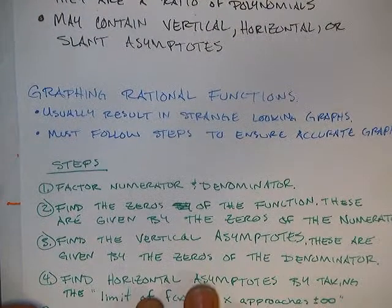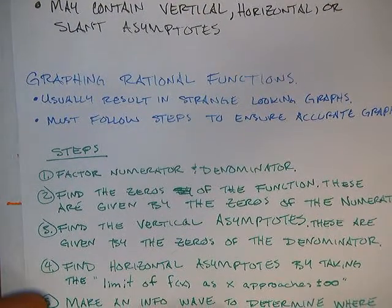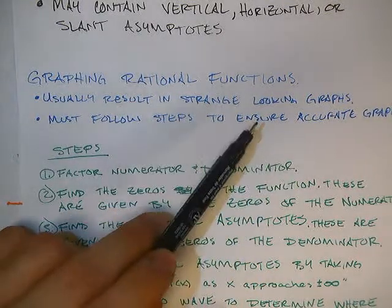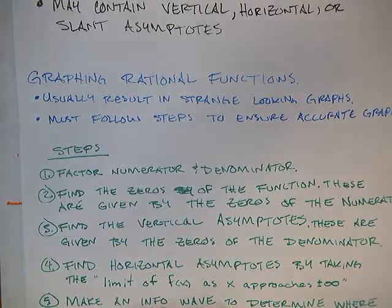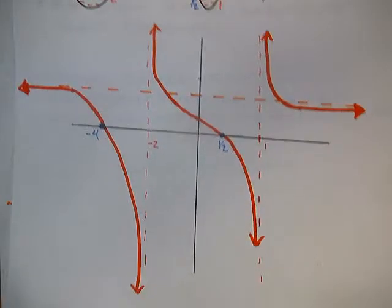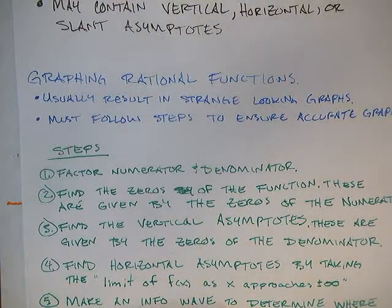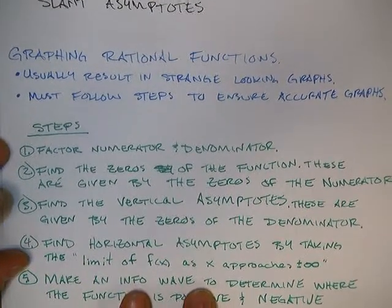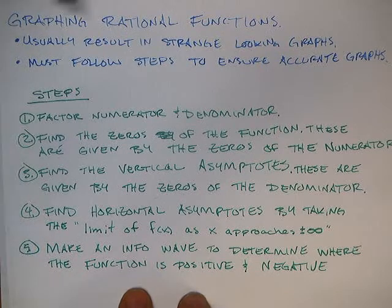Next class is when we'll start talking about slant asymptotes. Slant asymptotes require us to do a little bit of long division and synthetic division. So just know that that's coming your way. So when we graph rational functions, which is what we'll be doing today, they usually result in strange looking graphs. Meaning that we're going to have things that look sort of, if you look at this, look sort of scary, kind of like that. But don't worry, by the end of class you'll be able to graph these.